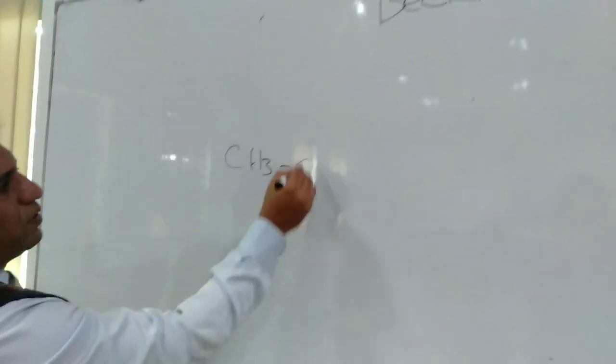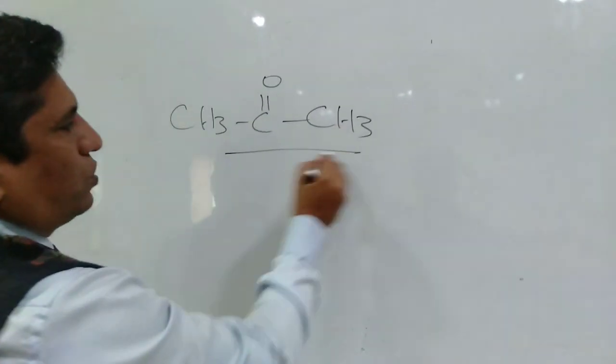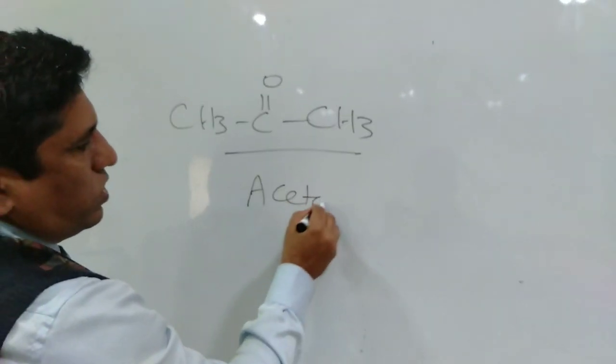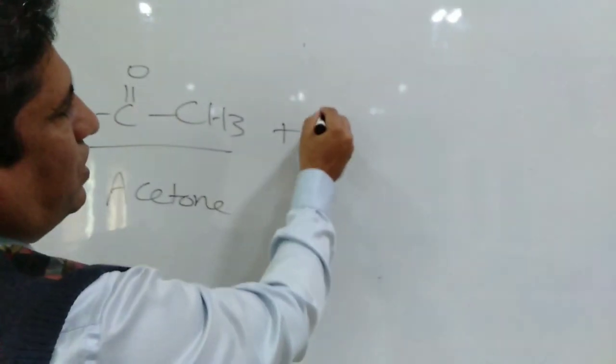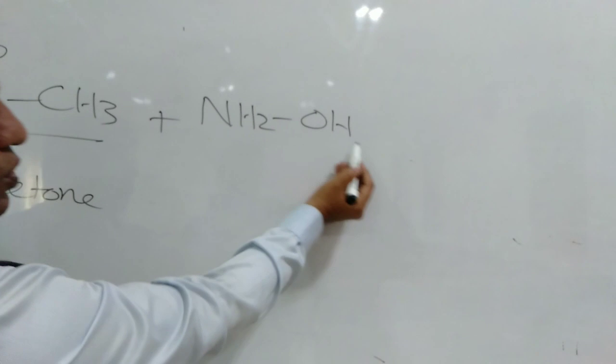CH3-C=O-CH3, that is ketone acetone, when you react with NH2OH, that is hydroxylamine...